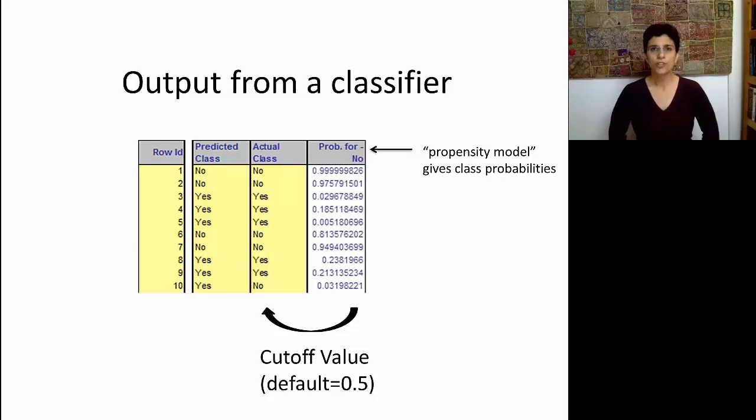The default number is usually 0.5, so that probabilities above 0.5 are classified as, in this case, no, and below 0.5 are classified as yes. But obviously we can change that cutoff value to other numbers, and note that although changing the cutoff value will not change the probability, it will change the predicted class in some cases. So, the cutoff value is another parameter that we attach to a classifier that will determine its performance.